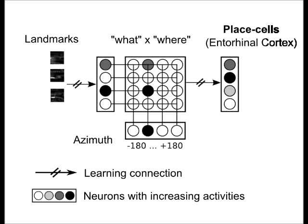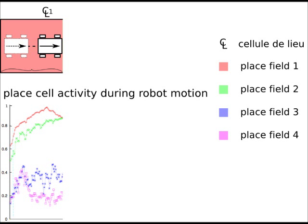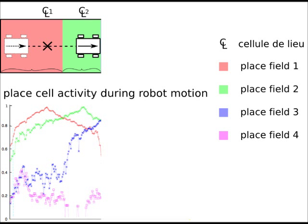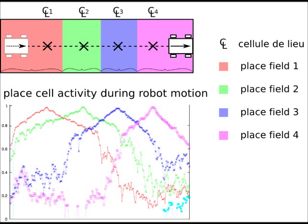A place is defined by a set of specific landmark azimuth couples learned online. Visual landmark recognition provides the what information and models the temporal pathway. The absolute landmark position provides the where information and models the parietal pathway. A place cell is thus defined as the categorization of a pattern of landmark azimuth couples.